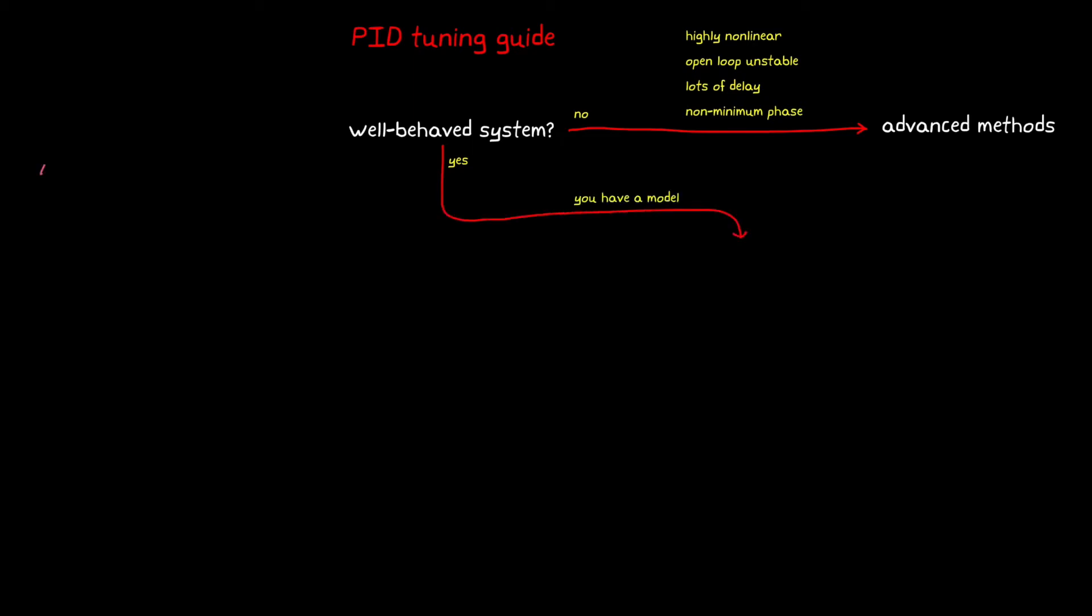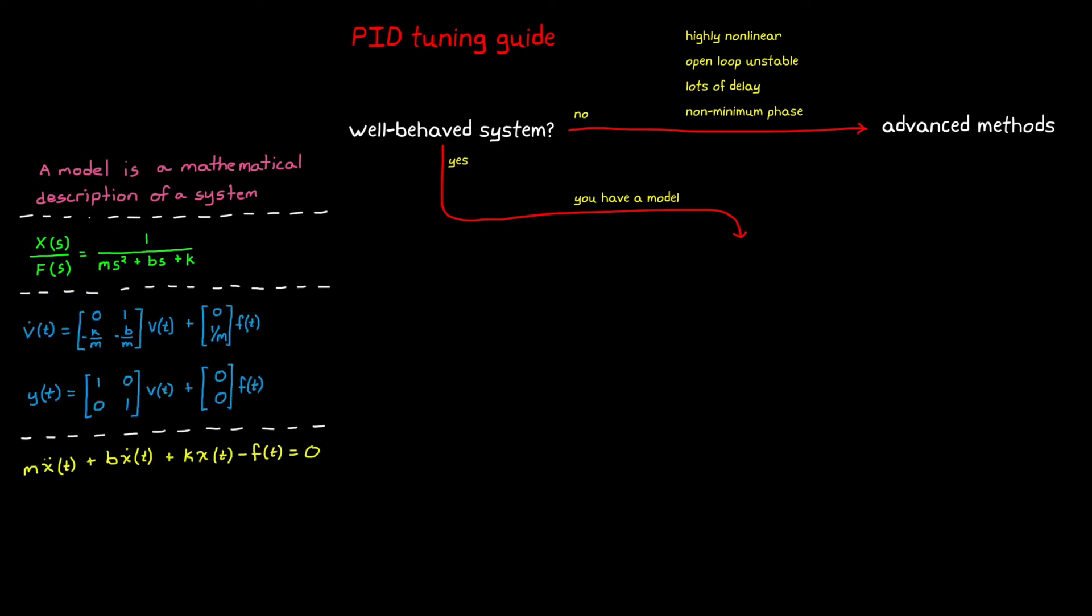A model is a mathematical description that could be presented as a set of transfer functions, state-space matrices, equations of motion, or a more complex simulation. Perhaps you got it from a textbook, or maybe the company you're working for has a team that developed the model for you.